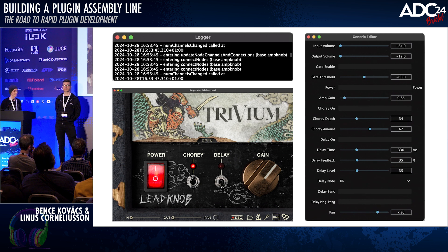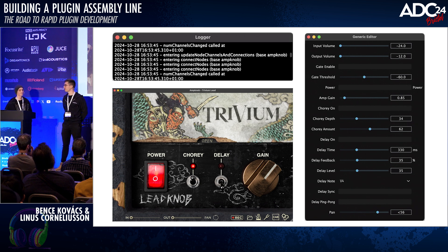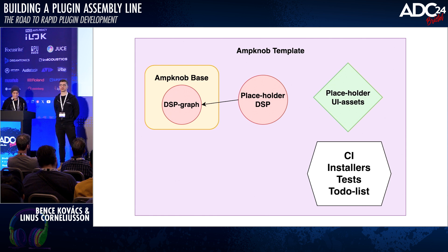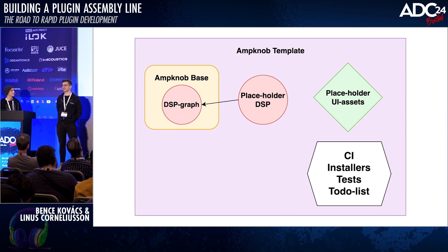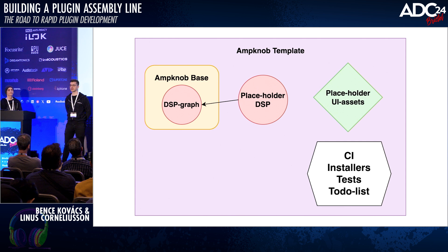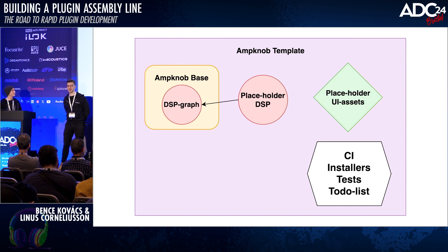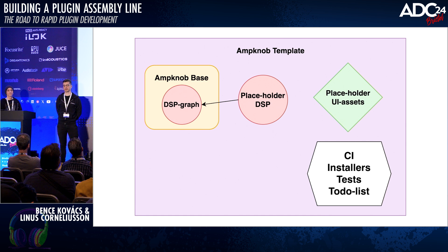Once we started using submodules and found a good common ground for all plugins, we also started using repository templates on our version control system. That's something we can use for getting started on new projects. It's a little more standardized in the form of a template. It takes about two clicks to get started on a new Git repo where all submodule references are already set up, placeholder DSP and UI are there, all CI scripts and installer scripts including code signing are included.